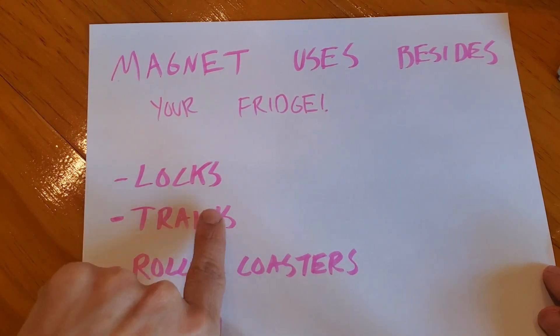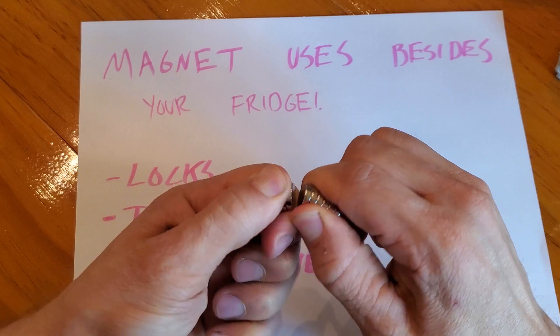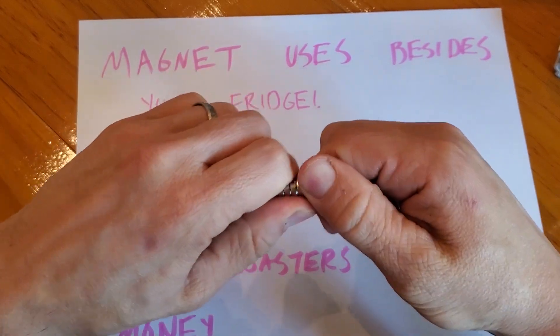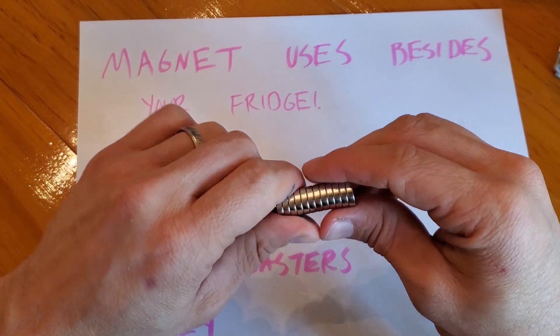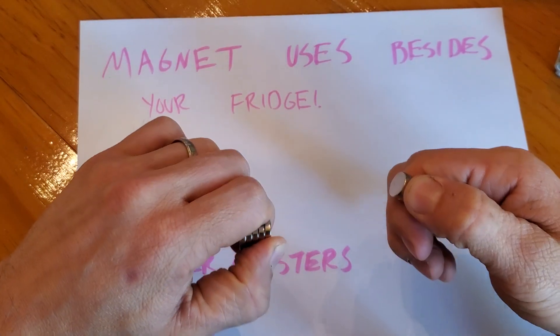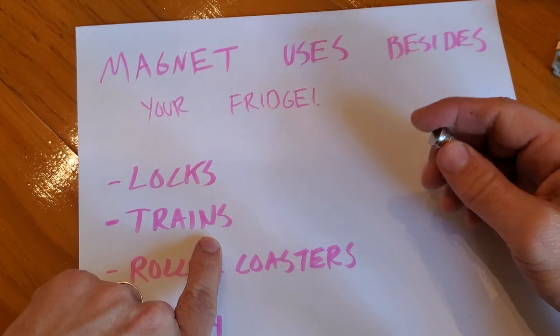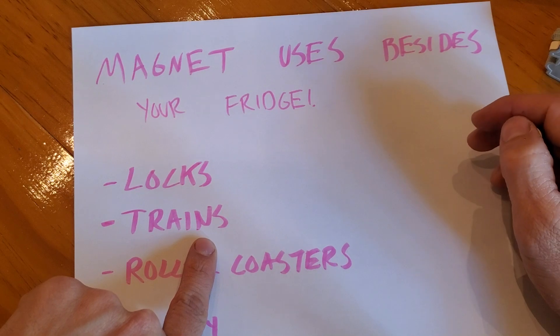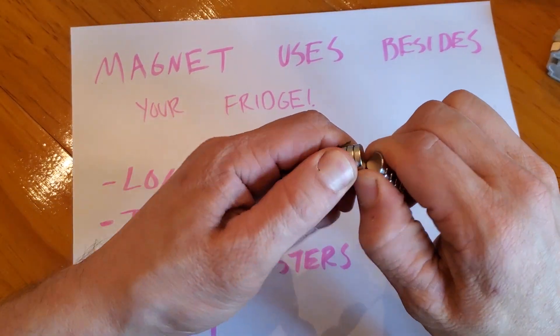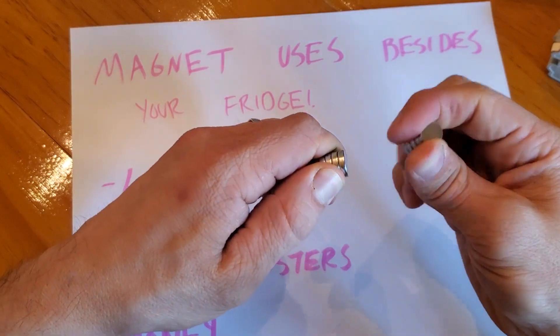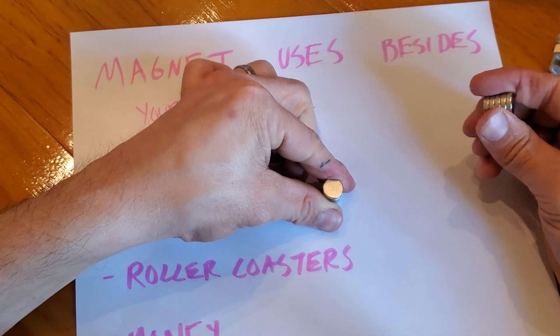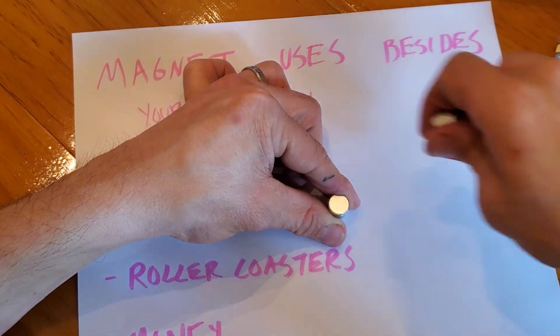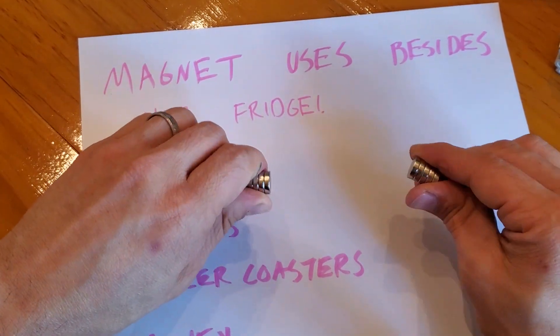A couple more uses for magnets besides your fridge. Locks that you would see not in your house, but like in a prison or somewhere very high security, you'd have really powerful magnets that you can't separate. You're trying to pull the door open. You're running a current through these magnets, causing them to work. When you want to unlock it, you turn off the current and then you can separate your magnets. You have trains. There are some trains that float on their track. They don't actually have wheels. They float using like charges. This could be our track. This could be our train and it would float on top, almost frictionless.